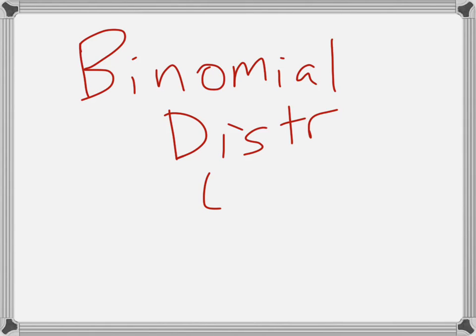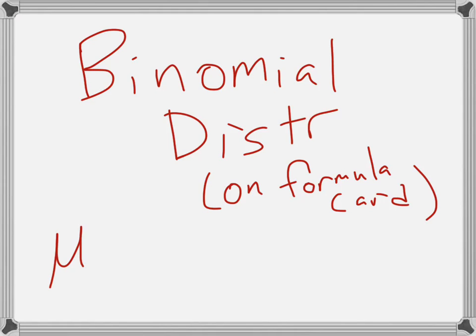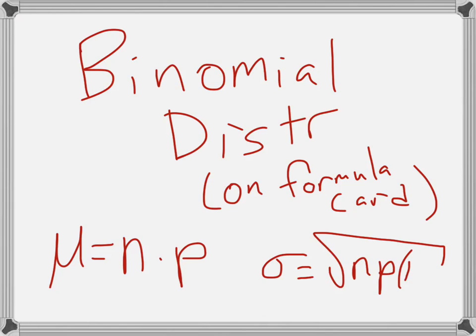So in general, for a binomial distribution, and this is on your formula card, the mean is n times p. And the standard deviation is the square root of n p 1 minus p. Well, isn't that exciting, kiddos? Well, I think it is. Up next, let's figure out the mean and the standard deviation of geometric distributions.